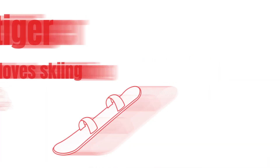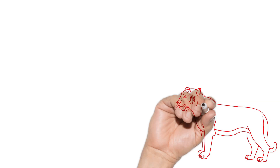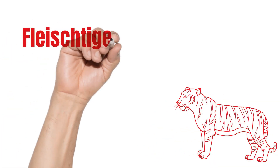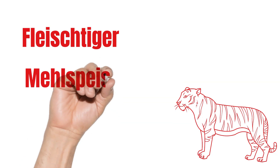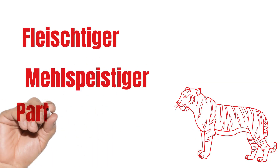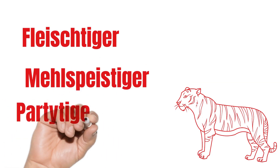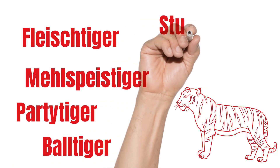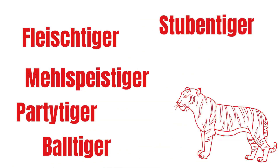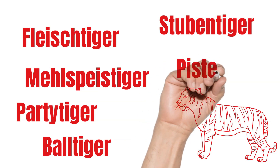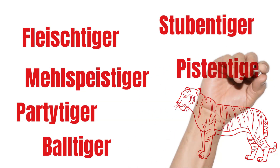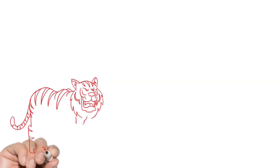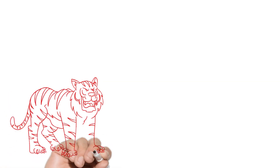Summing up, we can repeat the words we've learned today: Flashtiger, Mehlspäßtiger, Partytiger, Balltiger, Stubentiger, and Pistentiger. I hope you could learn the one or the other new word. If you want to hear more Austrian words and phrases, please check out this video.